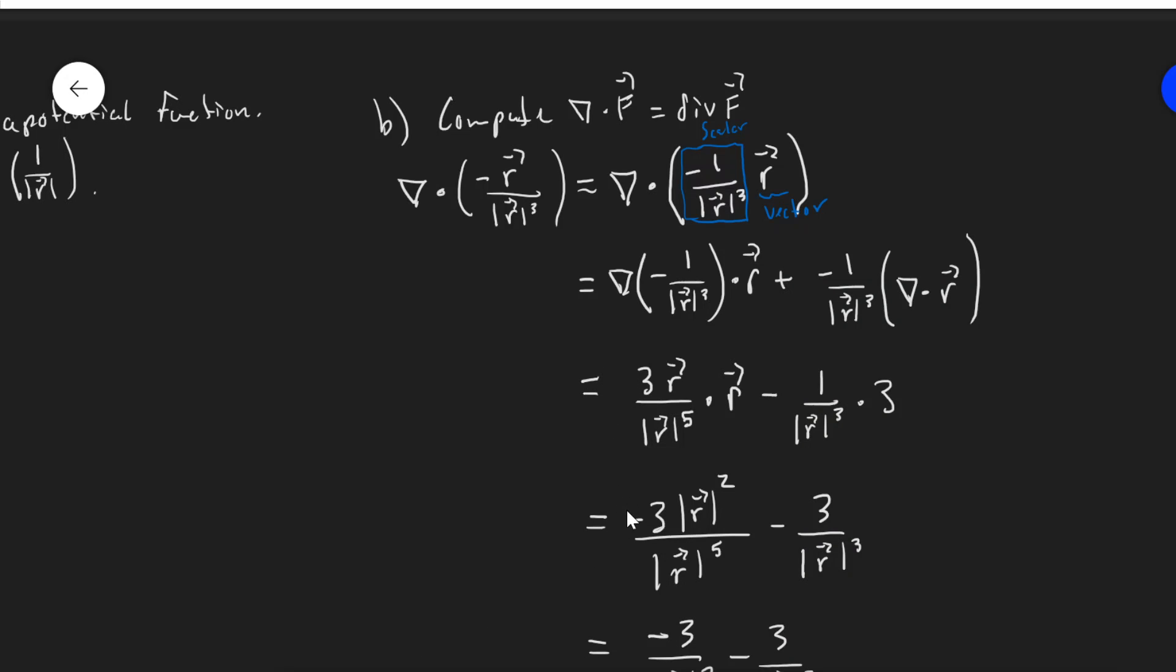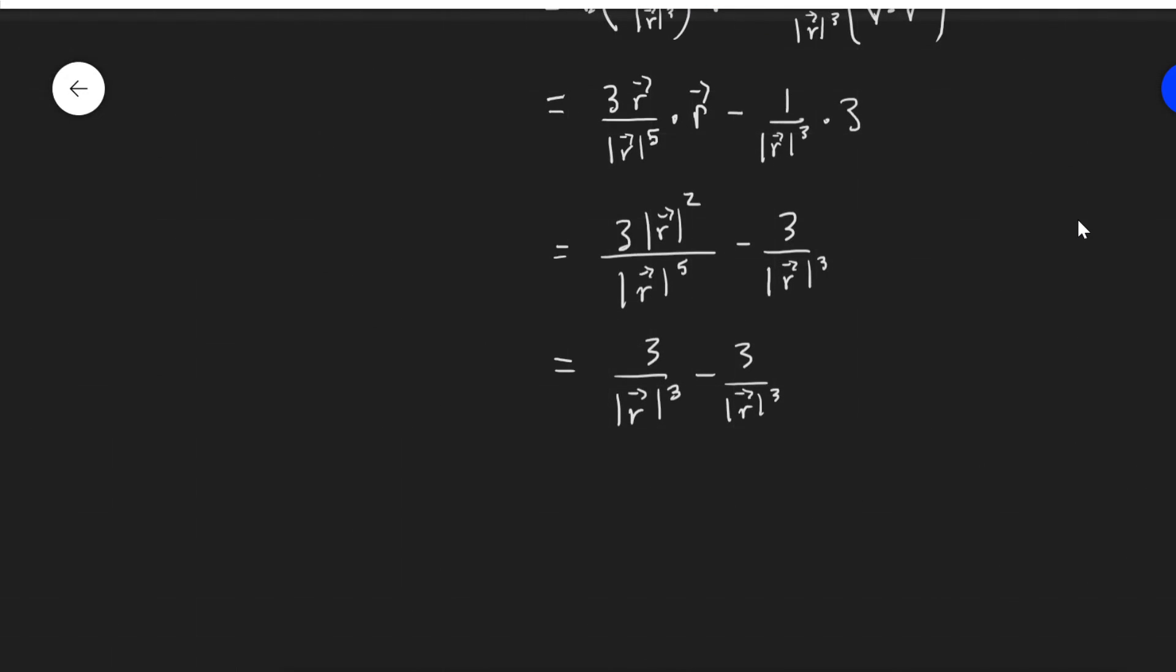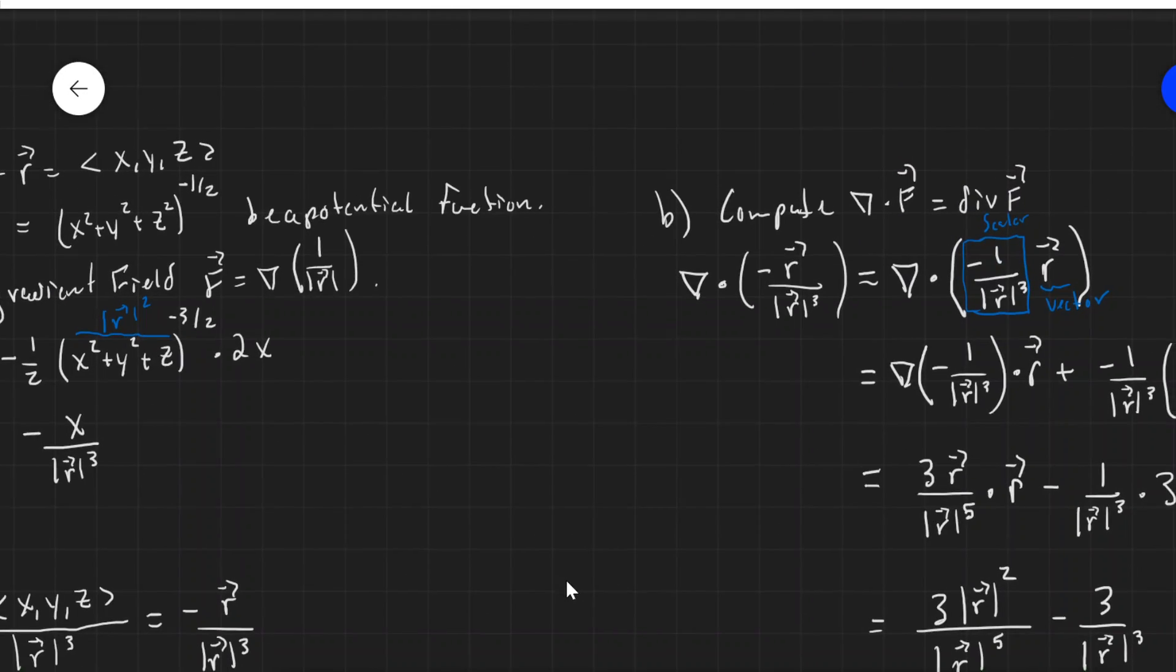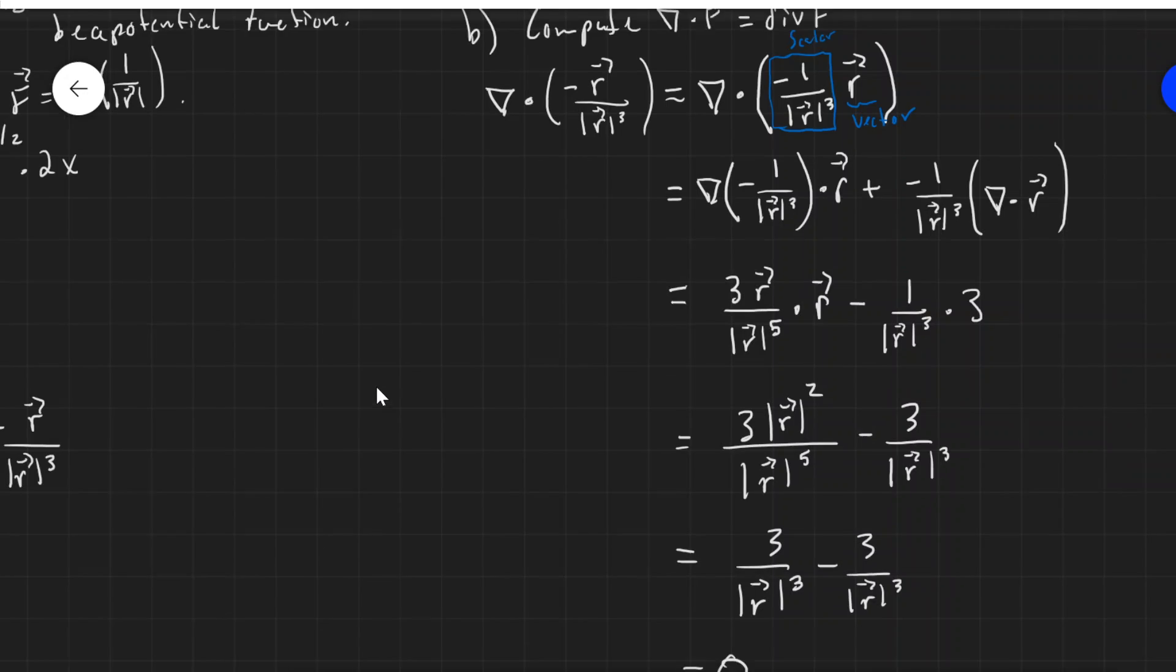Everything here is going to turn positive here. And I end up with zero. So that is the divergence of a gravitational field or electrostatic field is zero.